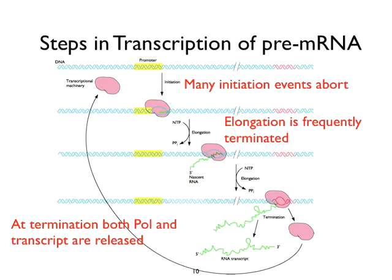What are the steps in transcription of pre-messenger RNA? Much like DNA replication — think of this as an origin of replication — it's a promoter. The transcriptional machinery recognizes this DNA sequence and starts to synthesize very small polynucleotides, many of which abort — called abortive initiations. The polymerase is stalled at the initiation site until changes to the polymerase and proteins on the promoter occur. Then it begins to move down the DNA template using nucleotide triphosphates, and elongation occurs. Elongation is also frequently terminated.